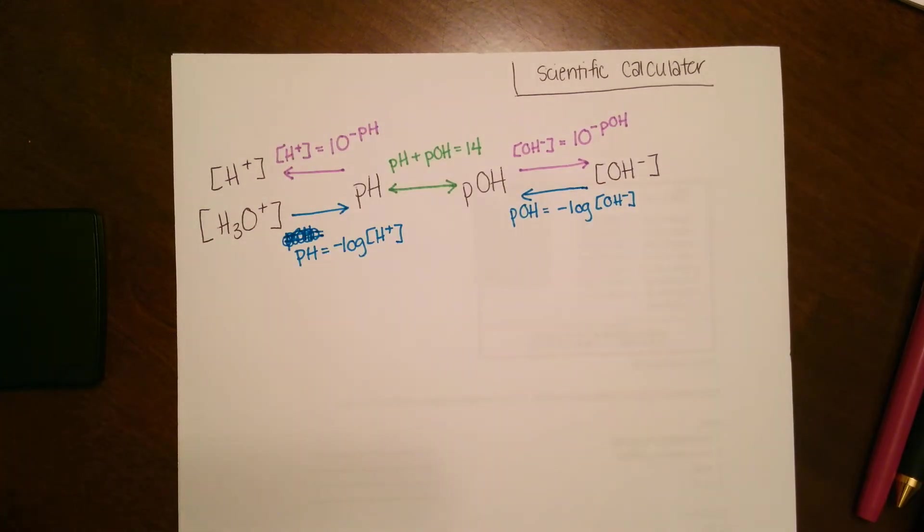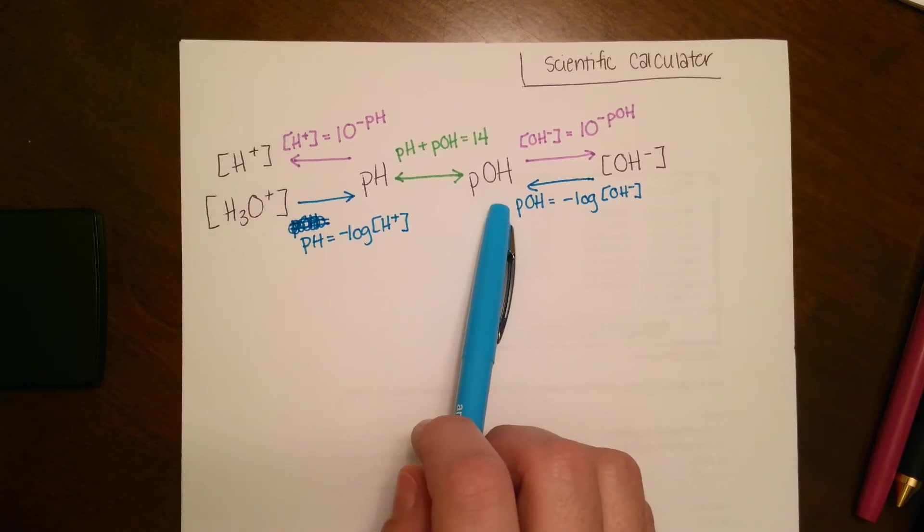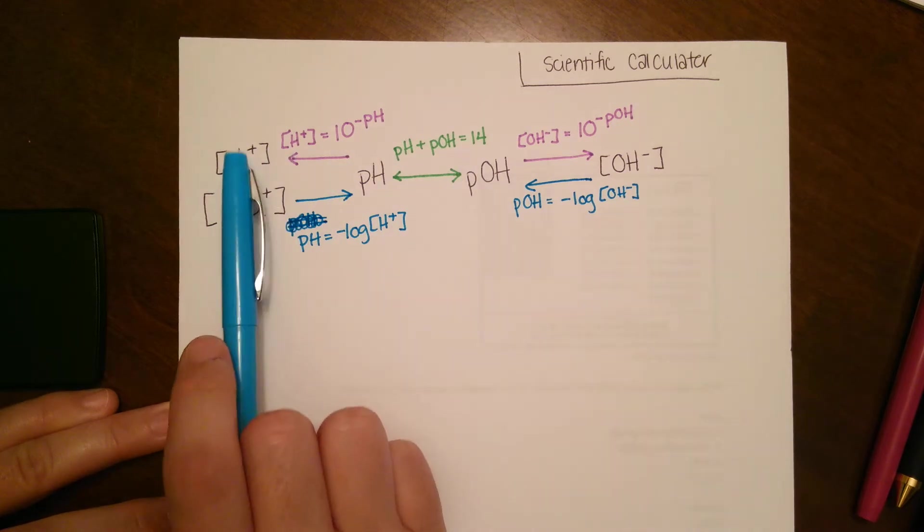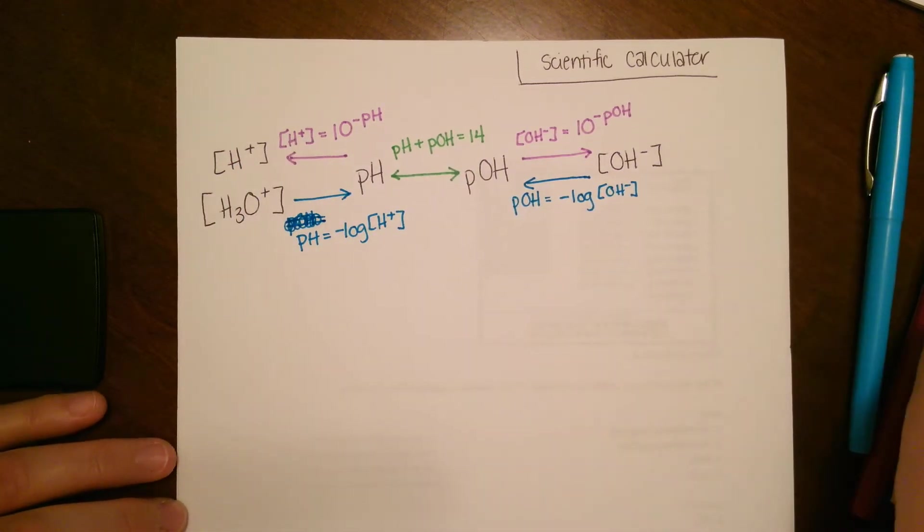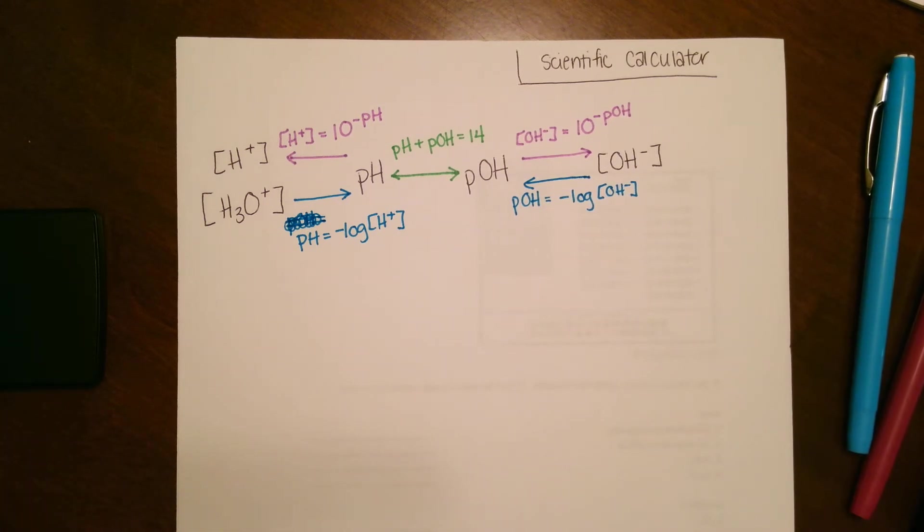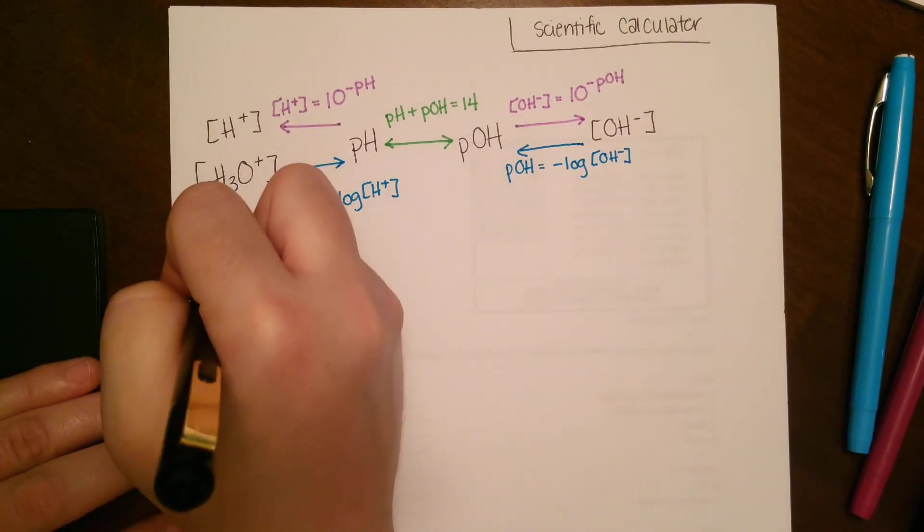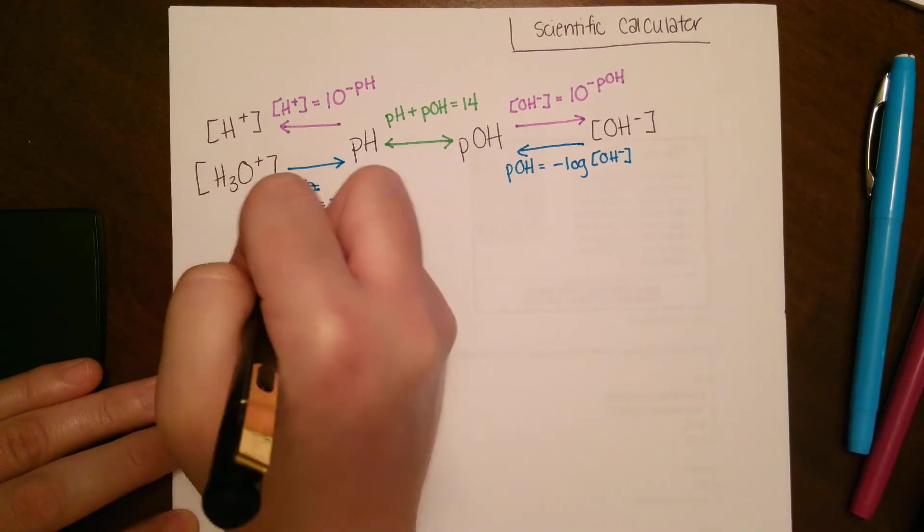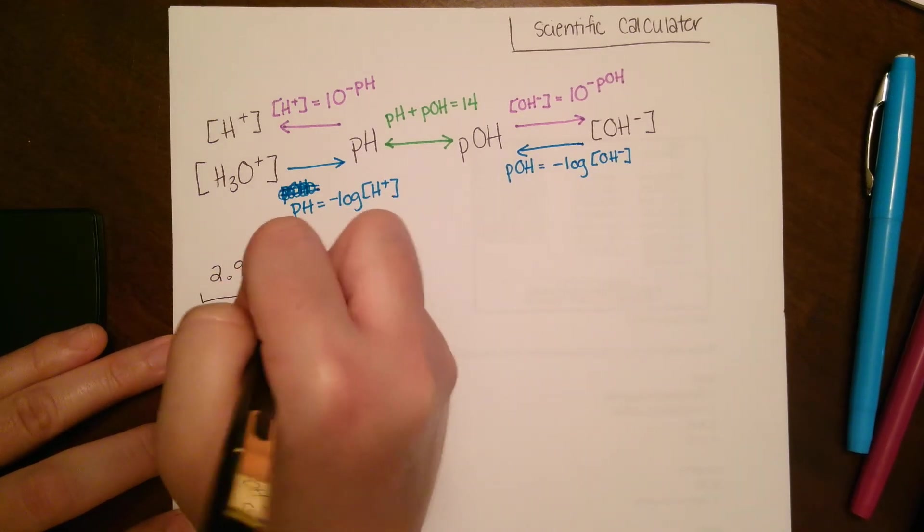For instance if we were given hydronium and asked to find pOH, there's no way to jump to connect those two. You're going to have to go from hydronium to pH to pOH. In this problem we're going to start with hydronium concentration 2.95 × 10^(-2).